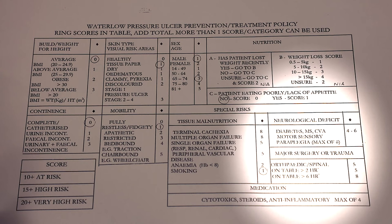Neurological deficit may impact on mobility and pain perception. The relative risks of diabetes, multiple sclerosis, and a history of cerebrovascular accident should be assessed using clinical judgment, assigning a score between 4 and 6. For example, if a patient has recently had a CVA with restricted mobility, assign a higher score such as 6. If it was a historical CVA but the patient has normal mobility and sensation, assign a lower score such as 4. Note the maximum score for the neurological deficit field is 6.